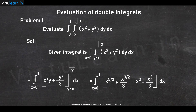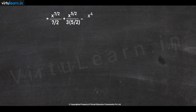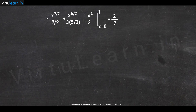Integrating with respect to x, these terms become x^(7/2) / (7/2) + x^(5/2) / (3 × 5/2) minus x⁴/3, to be evaluated at x = 0 and x = 1. We get the numerical value as 2/7 + 2/15 − 1/3, which equals 3/35.